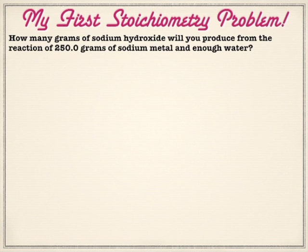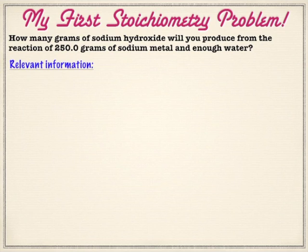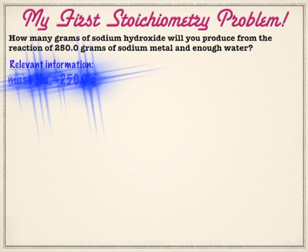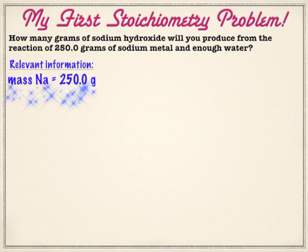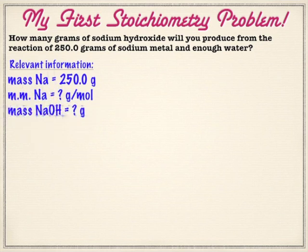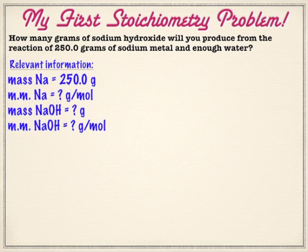So here we go. We're going to figure out how many grams of sodium hydroxide we will produce from the reaction of 250 grams of sodium and enough water. In later problems, we'll actually have set amounts of each reactant and one will run out before the other, but let's just pretend we had enough water. Write down your relevant information: you have 250 grams of sodium. We're going to need this molar mass because we're going to have to go from grams to moles. They're only asking for sodium hydroxide, so we'll need its molar mass too.